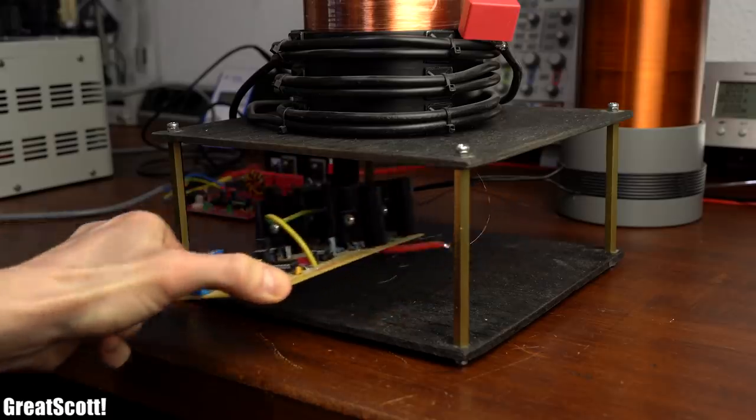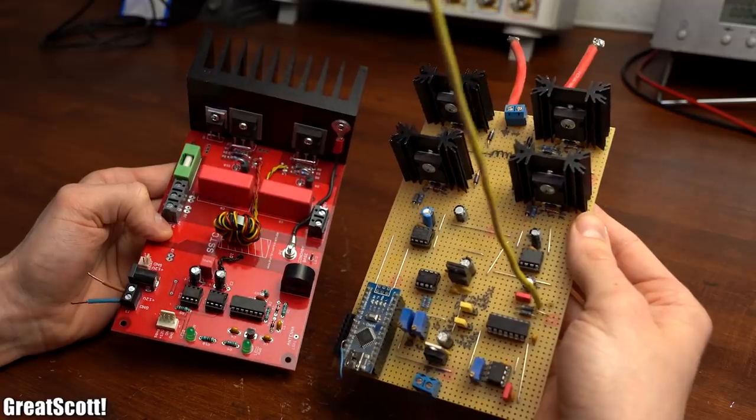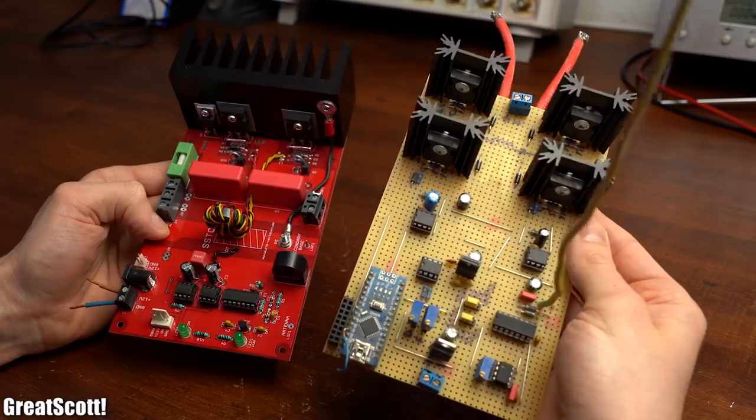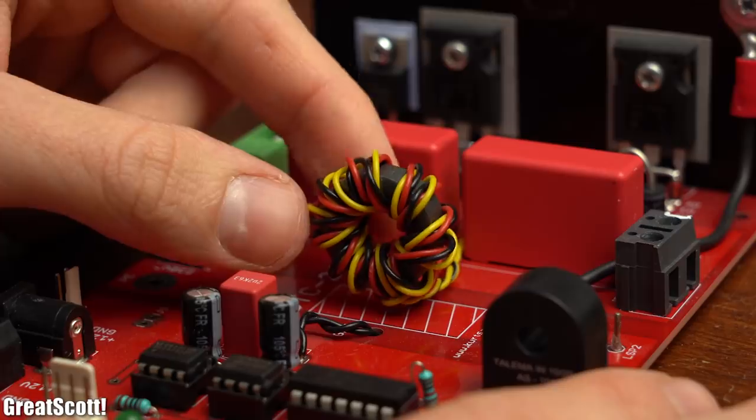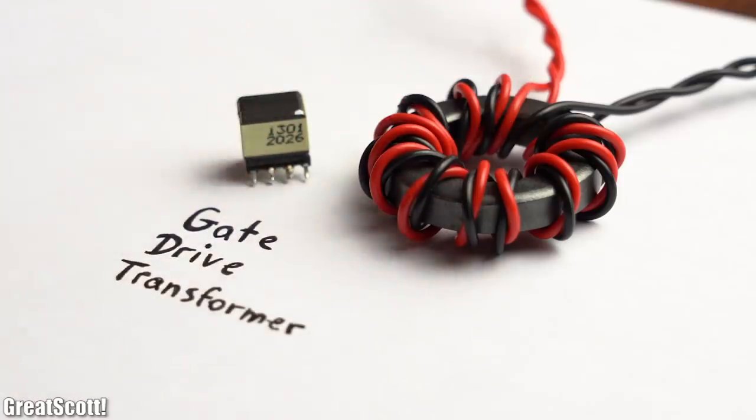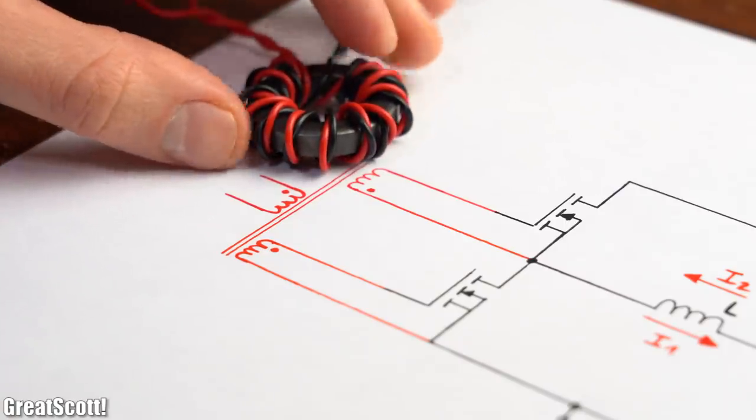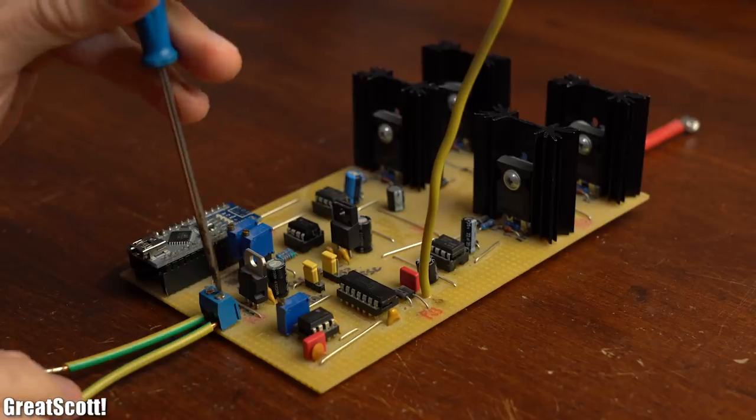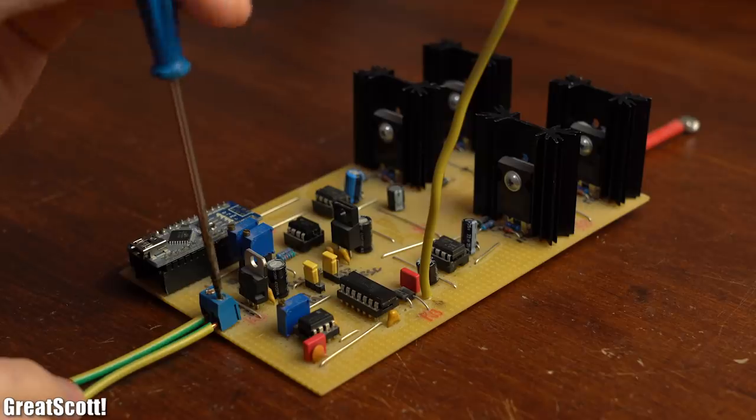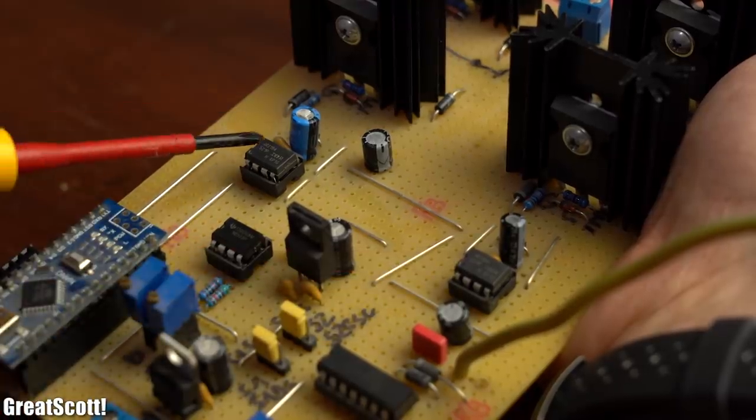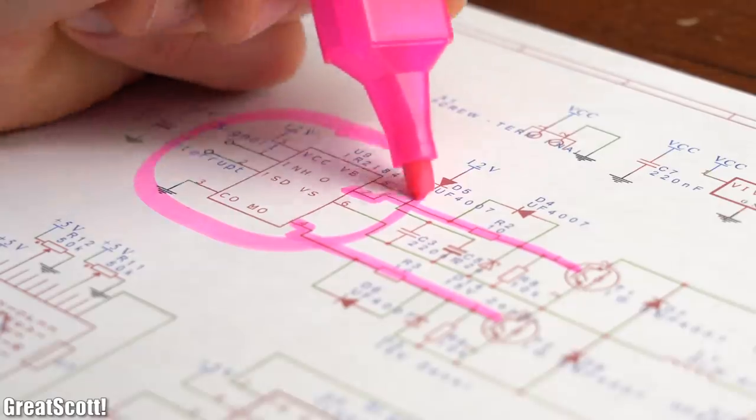But why is that when we consider that the driver of my old and new Tesla coil follow a pretty similar functional principle? Maybe this component is the answer which is known as a gate drive transformer and it is used to basically control the MOSFETs in the half bridge. I didn't use such a component for my old Tesla coil driver since I was using two bootstrapping driver ICs instead to control the MOSFETs.